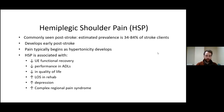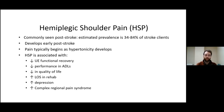Why do we care about shoulder subluxation post-stroke? It has a high correlation with hemiplegic shoulder pain, which we want to reduce or prevent. This is commonly seen in 34 to 84 percent of stroke patients and typically develops early on post-stroke. Pain begins with high tone and is associated with decreased upper extremity recovery, decreased ADLs, decreased quality of life, increased length of stay in rehab, increased depression, and increased risk of complex regional pain syndrome.